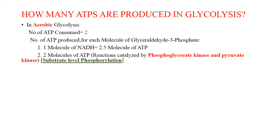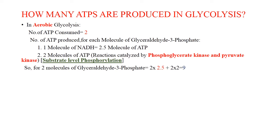Rather than from ADP and inorganic phosphate as in oxidative phosphorylation, the amount of ATP generated by glycolysis is relatively low. For two molecules of glyceraldehyde-3-phosphate: 2 × 2.5 = 5 ATP from NADH, plus 2 × 2 = 4 ATP from substrate-level phosphorylation, giving 9 ATP credited. Subtracting the 2 ATP consumed, net ATP produced is 7 in aerobic glycolysis.